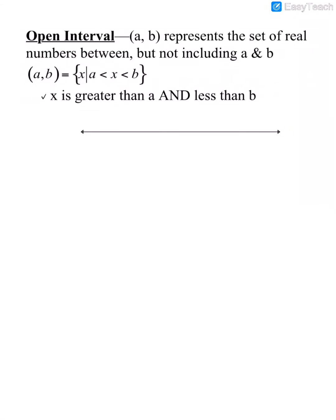We can also graph our interval on the number line. If A and B are two numbers on the number line, then the interval from A to B with A and B not included would have a parenthesis on the number A, a parenthesis on the number B, and it would be all of the numbers in between those two numbers on the number line.